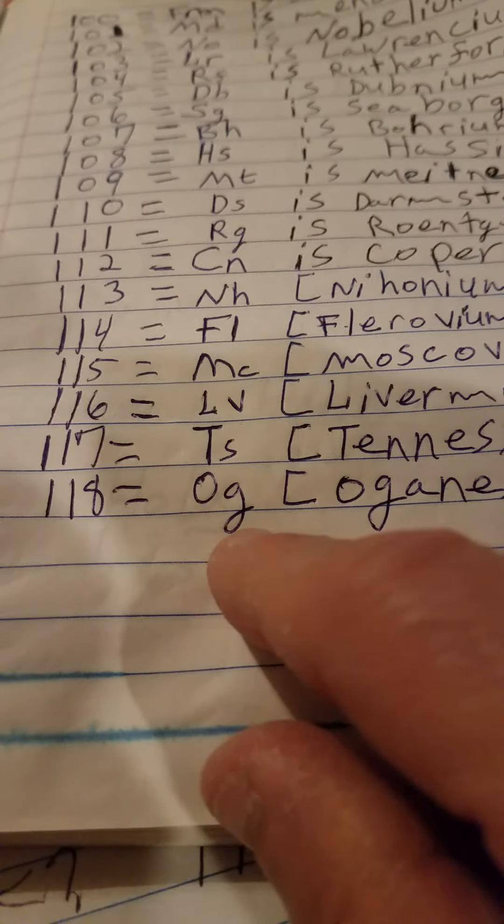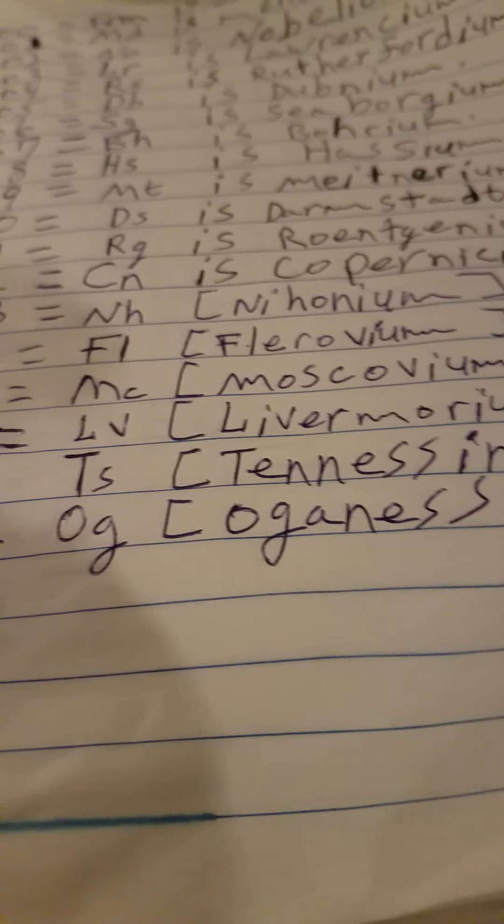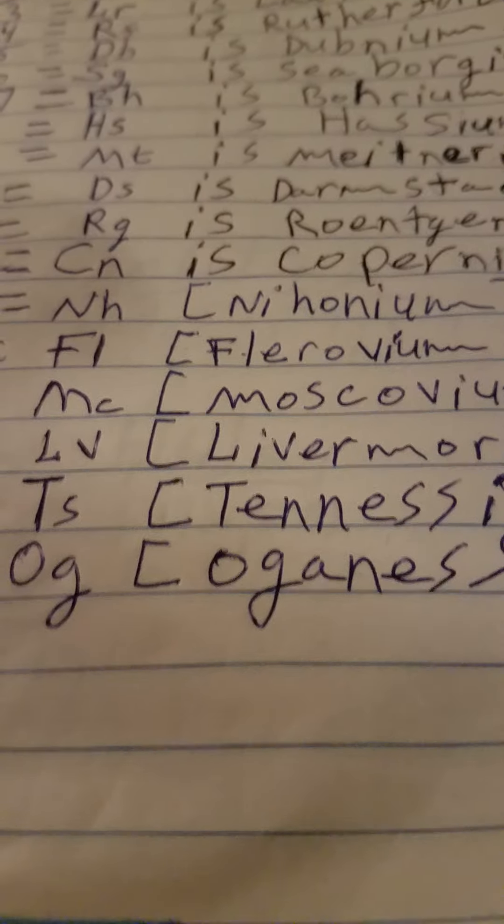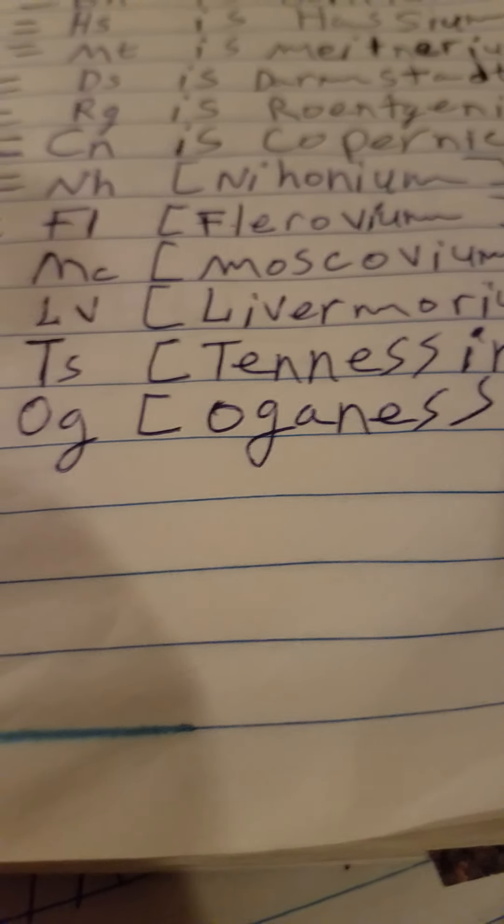And capital O and a small G is for Oganesson. That's the doctor or the person, the scientist or chemist that discovered it or made it - named in his honor.